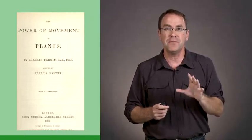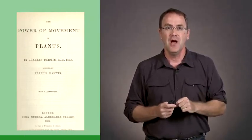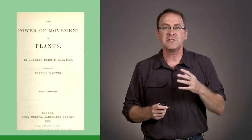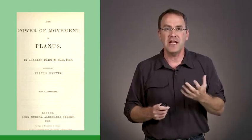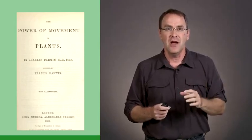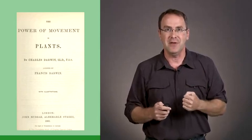This begs the question, how is the gravity sensed? Where is the gravi-sensor? It might not surprise you to learn that one of the first people to ask this question was Darwin in the same book, The Power of Movement in Plants in 1880. But before we go into the experiments that Darwin carried out to identify the gravi-sensor, we need to go a little bit more into plant anatomy.